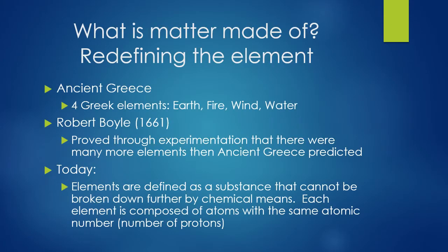Let's start by defining matter. So what is matter made of? In ancient Greece, they thought there were just four elements: earth, fire, wind, and water.